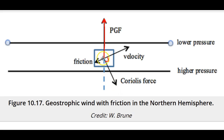The velocity vector gets turned toward the PGF vector, and thus toward the low pressure. Note that the x-direction of the frictional force must balance and be opposite to the x-direction of the Coriolis force, and the y-directions of the friction and Coriolis forces must be opposite to and balance the PGF in the y-direction in the diagram.